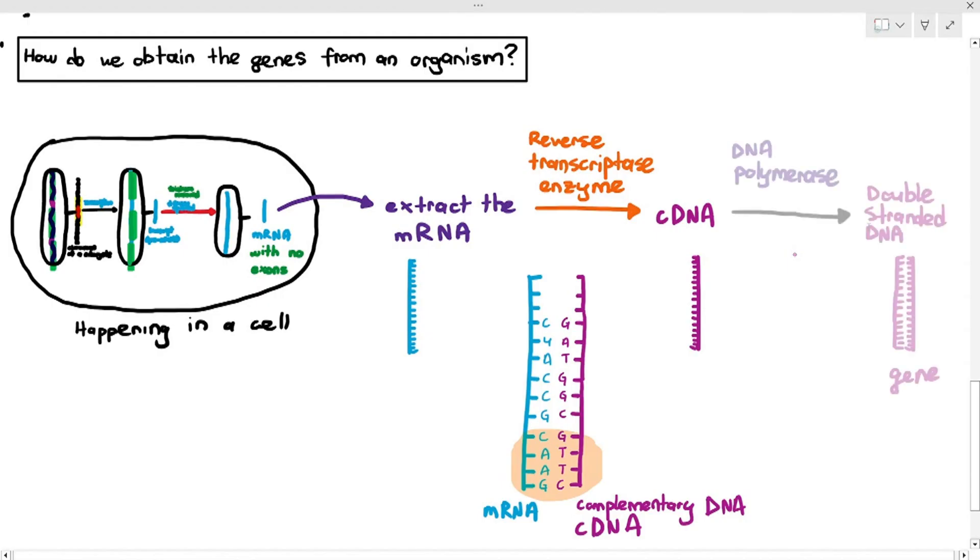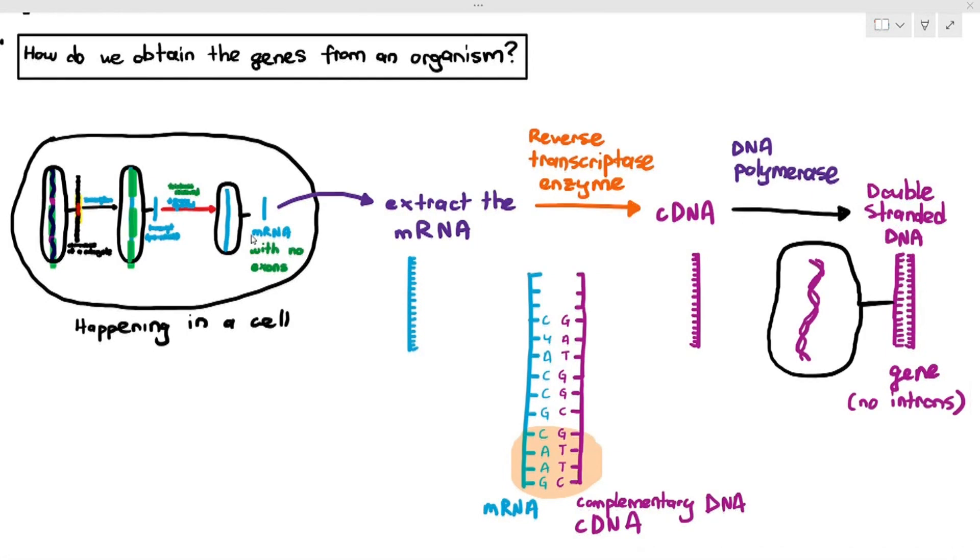Very simple. I just use DNA polymerase. And when we use DNA polymerase, it makes the other strand, and in this other strand of DNA, you get the gene. That's where the gene comes from, directly. And look at this gene. This gene does not have the introns anymore, because the original mRNA that you took did not have the introns at all.